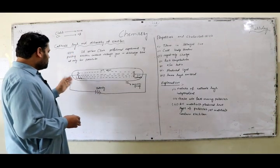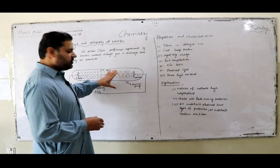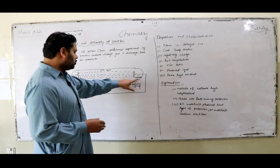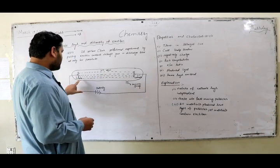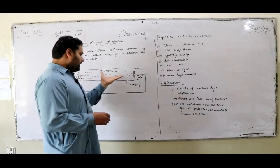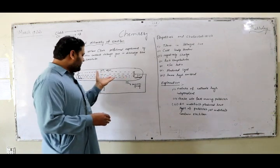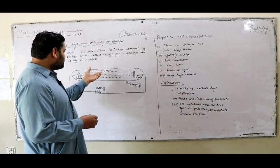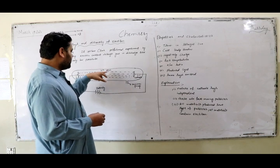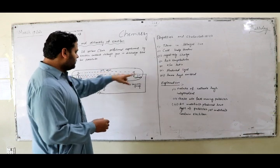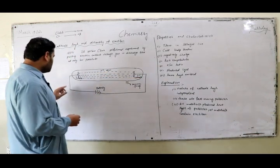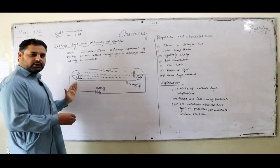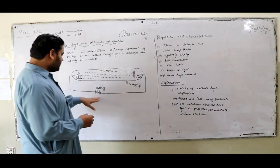Sir William Crookes took a discharge tube which had two electrodes, cathode and anode. Inside the tube, the atmosphere was adjusted with a vacuum pump and the pressure was kept at 10^-4 atmosphere. When these two electrodes were connected with a high voltage battery,